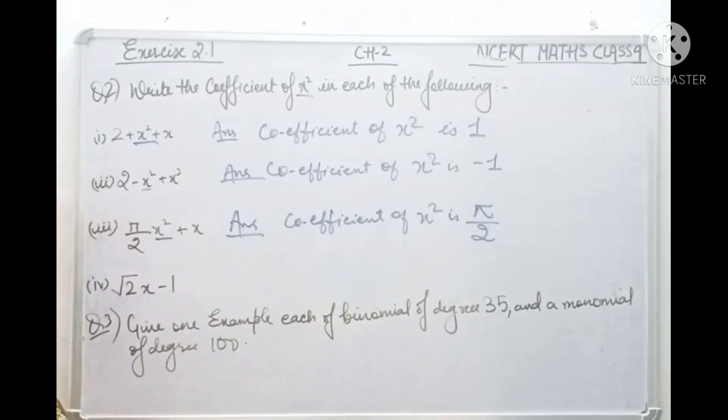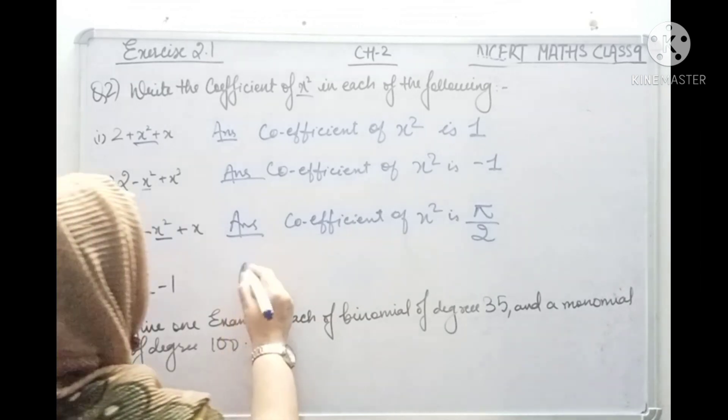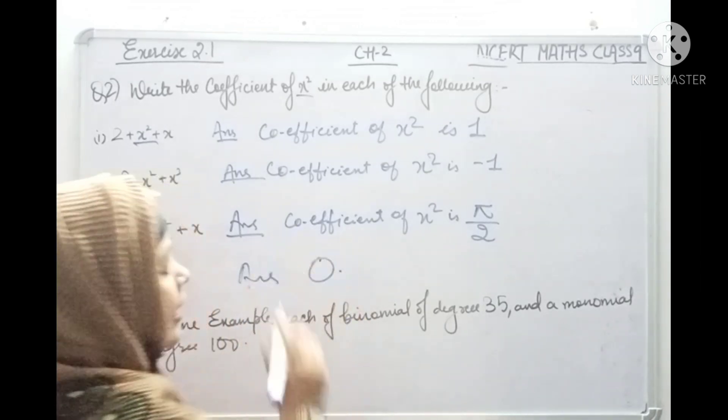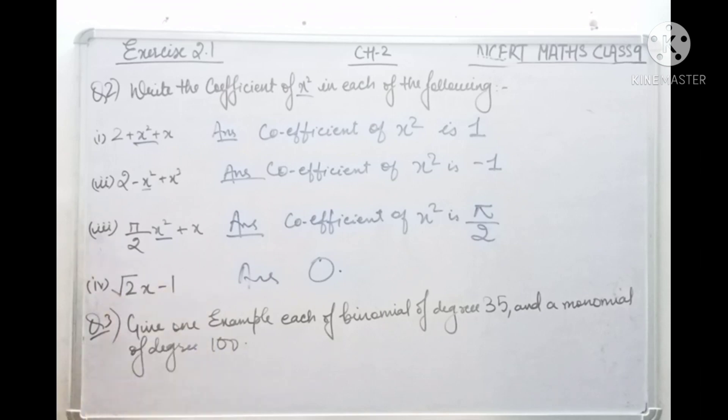The next one is root 2x minus 1. Now look with attention. Is there any variable here that is x square? There is no x square. So coefficient is 0. If it is not there, what will be the answer? The answer will be zero because we don't have x squared.